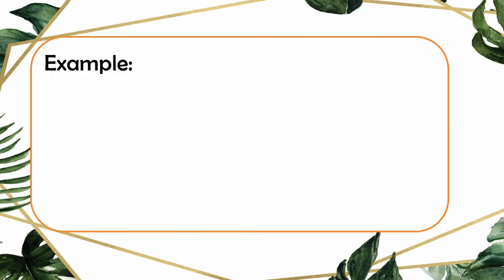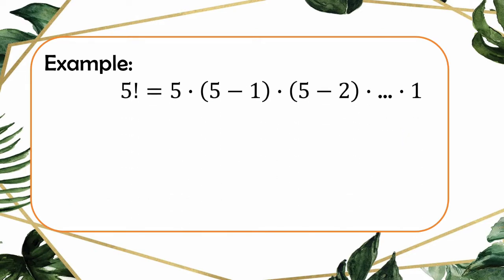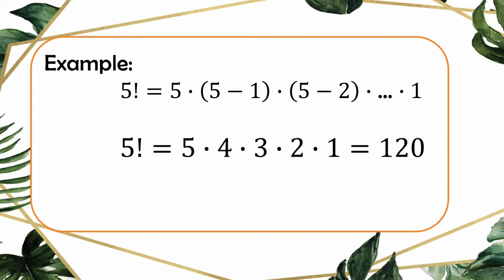Let's have a concrete example for evaluating the factorial of a number. We have 5 factorial, so n is 5. We have 5 times (5 minus 1) times (5 minus 2) and so on times 1. Simplifying the operations inside the parentheses, we get 5 times 4 times 3 times 2 times 1. Four comes from 5 minus 1, three from 5 minus 2, and so on. Multiplying all gives us 120. This is the factorial notation, and the expanded form.